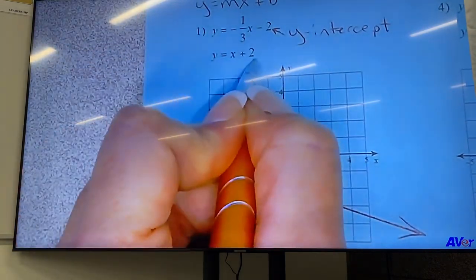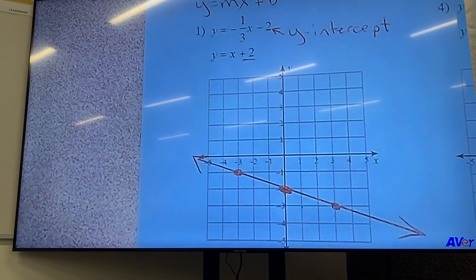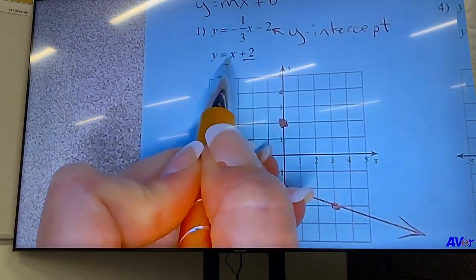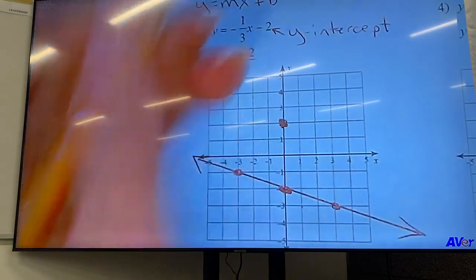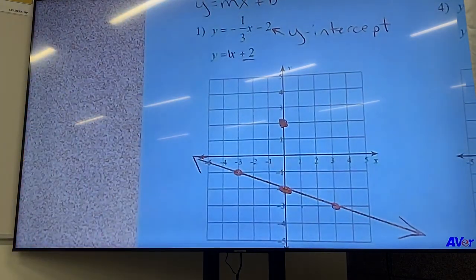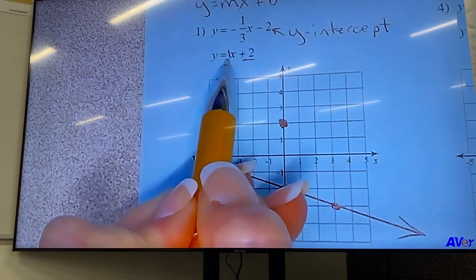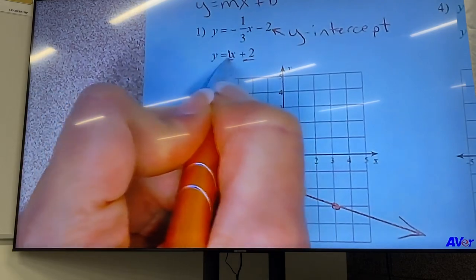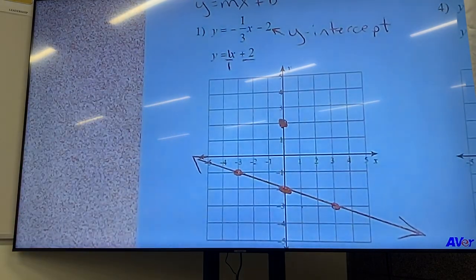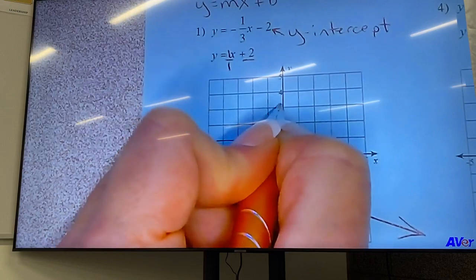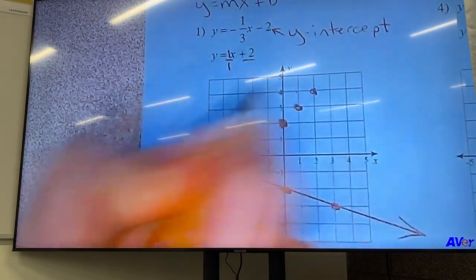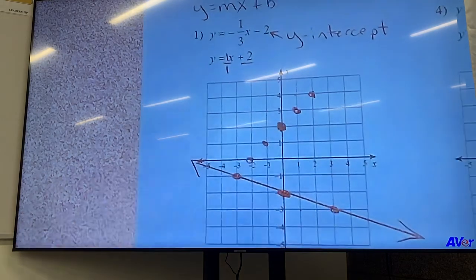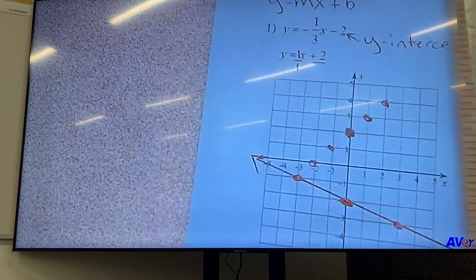Next line, the y-intercept is two. So I'm going to put my first dot right there. So I have an x with no number. Remember when there's no number in front of the x, it's actually a one. And then whenever you have a number that's not already a fraction for your slope, you just make it a fraction by putting it over one. So our slope is up one over one, up one over one. I can also go the opposite way, down one over one, down one over one. So then there's my second line.